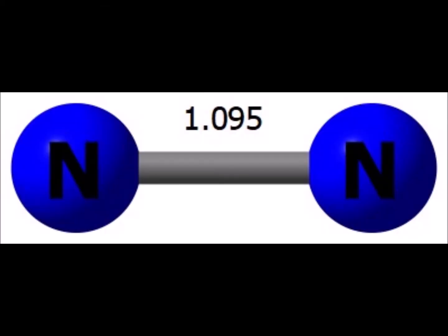As we saw for carbon, sp hybridization leads to a linear configuration. When you have two atoms it has to be linear, but the lone pairs that are part of the sp hybrids are not seen in the picture because we can't see the lone pairs. We've noted the calculated bond length of 1.095 angstroms because this is a nitrogen-nitrogen triple bond. One of the bonds is an overlap of sp hybrids on each nitrogen, and the other two are pi bonds involving the unhybridized 2py and 2pz orbitals on each nitrogen.